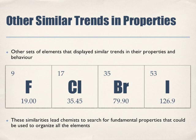So the halogens also share similar physical and chemical properties. What did we notice about the two groups? Both represent groups of the Periodic Table. So when we look at the different groups on the Periodic Table, these groups exhibit similar physical and chemical properties. These similarities led chemists to research for fundamental properties that could be used to organize all these elements.